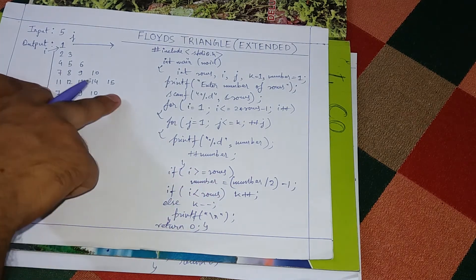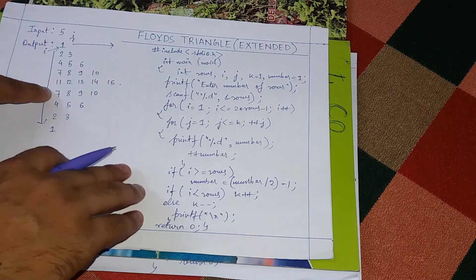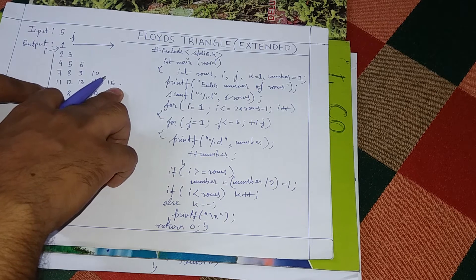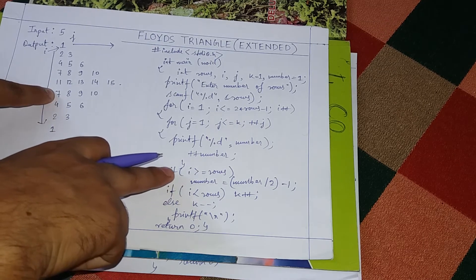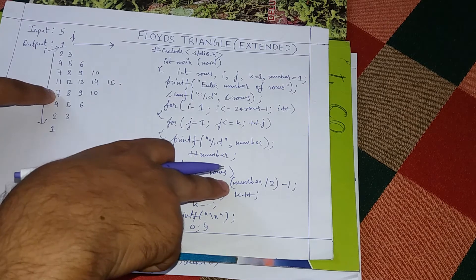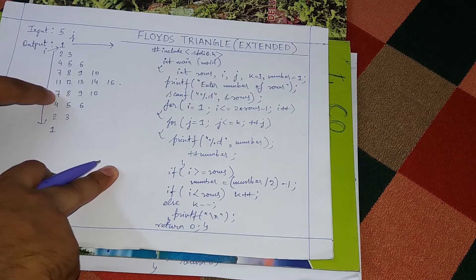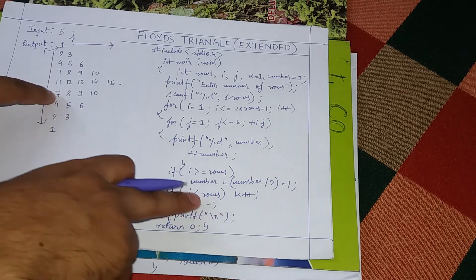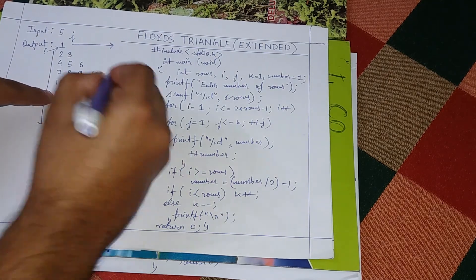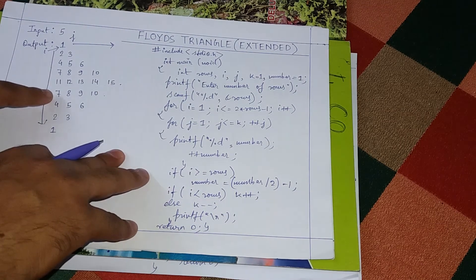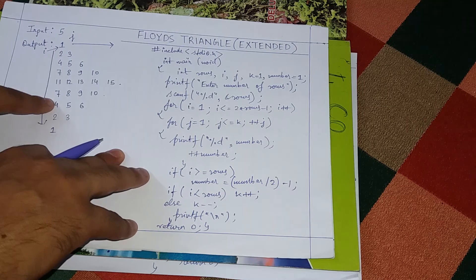At the position just after fifteen, the cursor moves forward so number becomes sixteen. The condition i greater than or equal to rows is true, so number equals sixteen divided by two minus one, which is seven. Seven is printed, then number increments and the line prints. After ten, number becomes eleven. Eleven divided by two minus one is four, so the next mirror row starts from four and prints four five six.